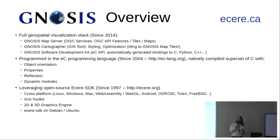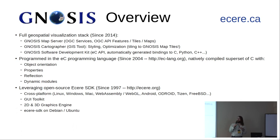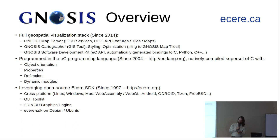EC is a superset of the C language — compiled and native — and we add things like object orientation, properties, reflection, and dynamic modules: the sort of features you find in modern programming languages. So you get the best of both worlds — you can rapidly write very fast, high-performance code, and that's why we use it to build Gnosis. The language home is at eclang.org and was designed in 2004. That's the background for my talk.